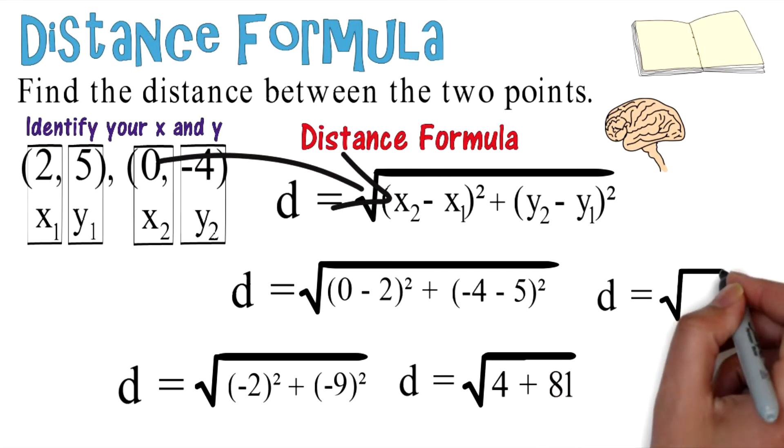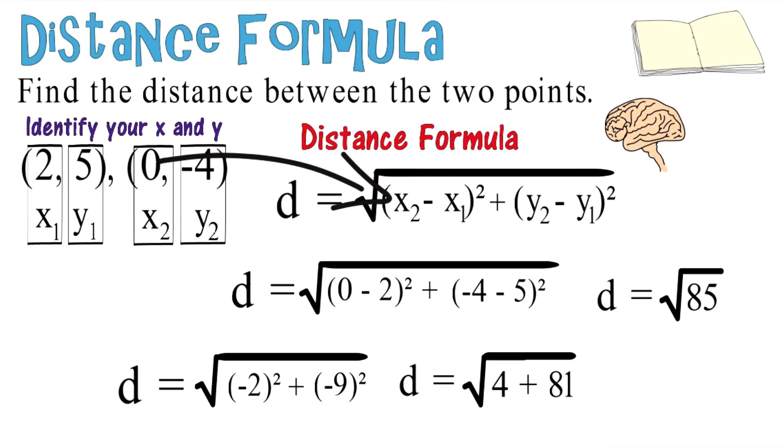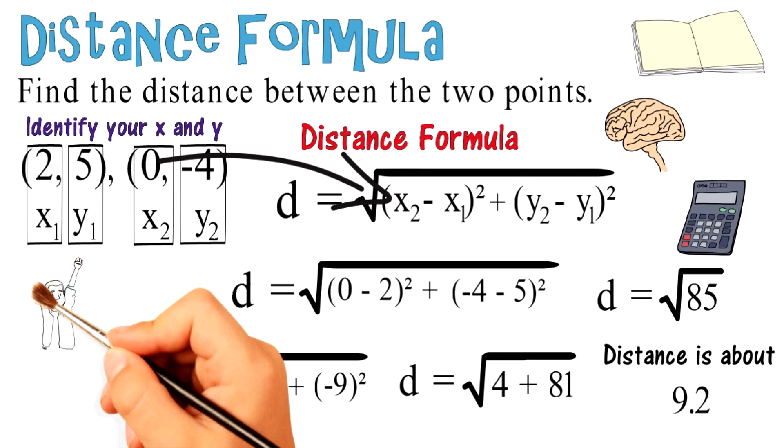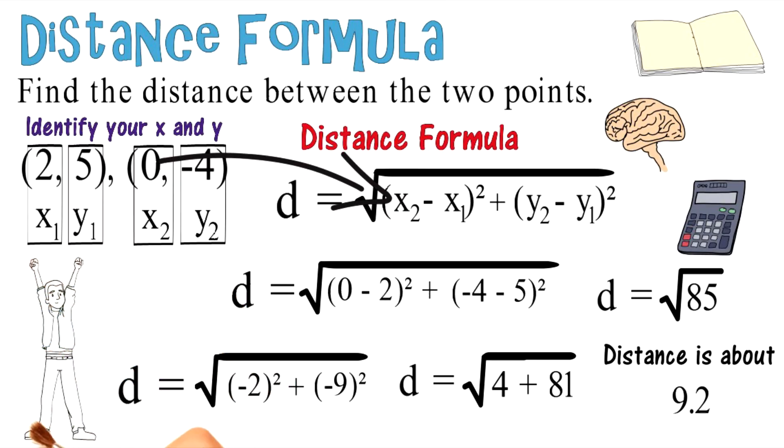Continue to simplify and you've got distance equals the square root of 85. If you plug that into the calculator, you can leave it as √85 or calculate it as approximately 9.2. Good job on this assignment and keep paying attention.